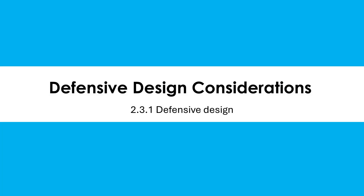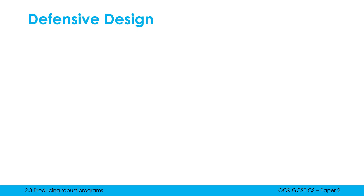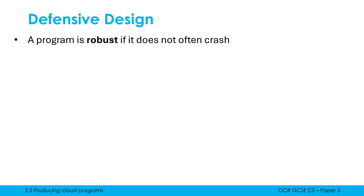We're going to be talking about defensive design, which is all about trying to make our programs as robust as possible. A program is robust if it does not often crash. All of us have come across even professionally made software which doesn't respond, or it freezes, or it lags, or we get an error message, or the window just closes.